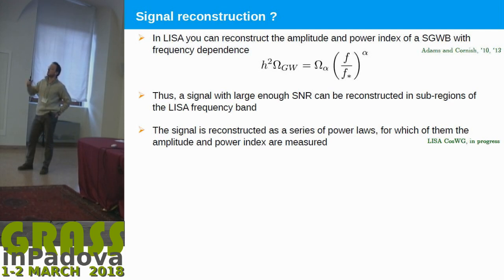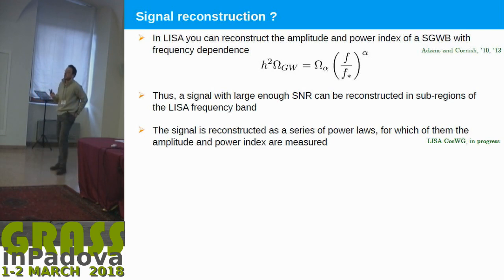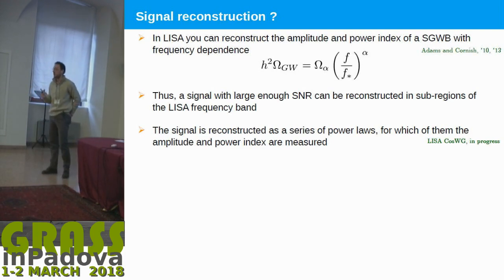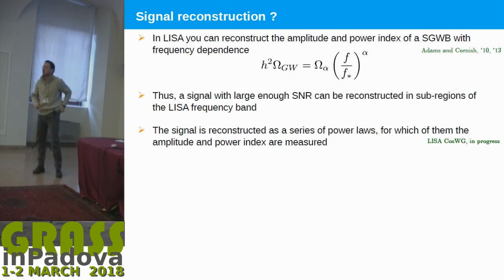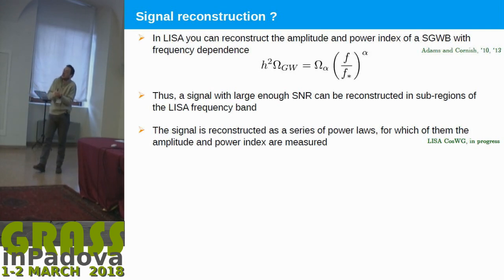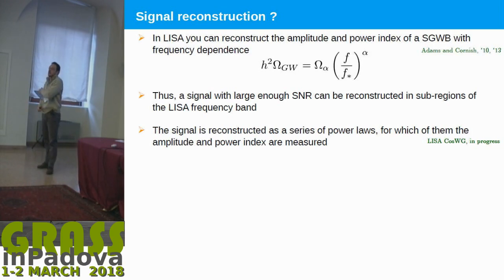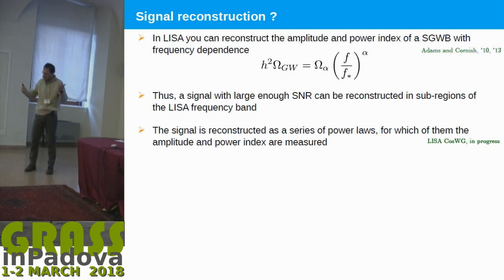At this level, in LISA and I guess also in other collaborations, we say we have a signal or we don't have a signal. But the crucial question, at least for me, is: if I have a signal, what can I learn? Can I understand, for instance, if the signal comes from a phase transition, from black holes, or whatever?